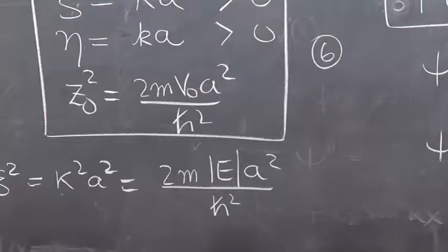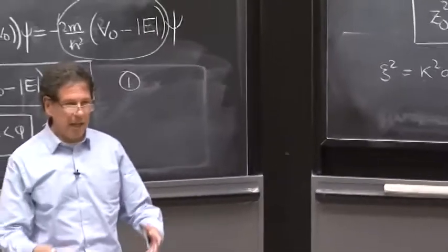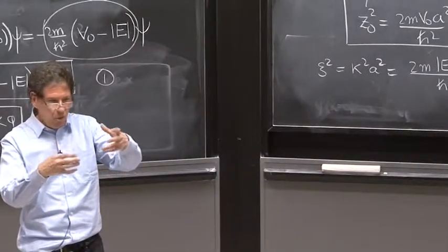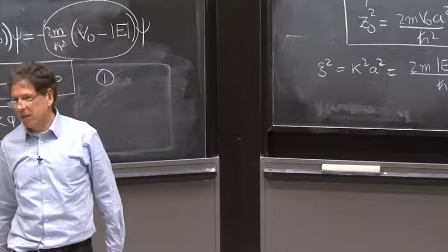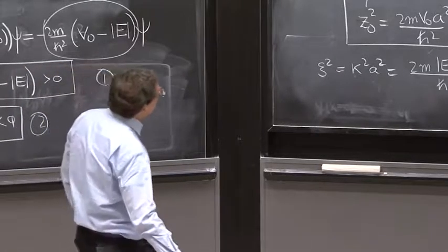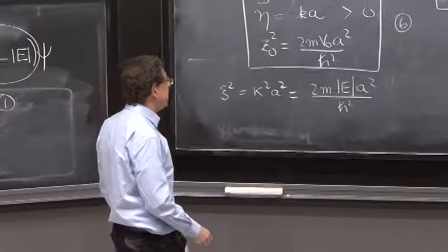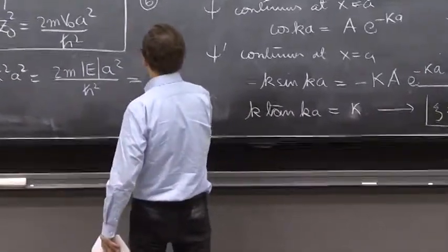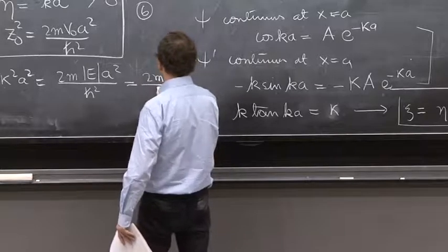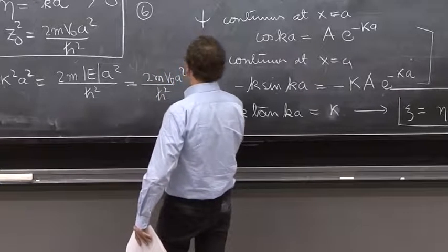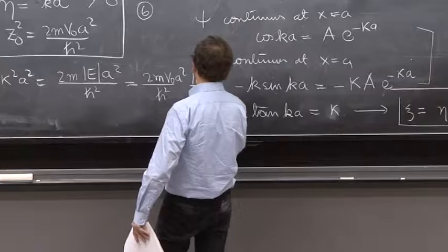Now, if you want to find e, you're going to get it in some units. Even e is nice to have it without units. So I will multiply and divide by v₀, 2m v₀, a squared over ℏ squared.